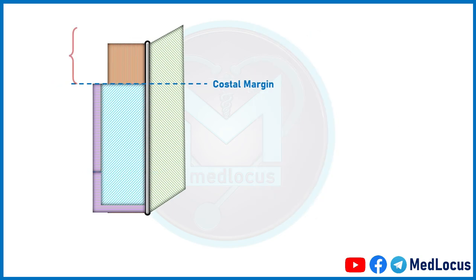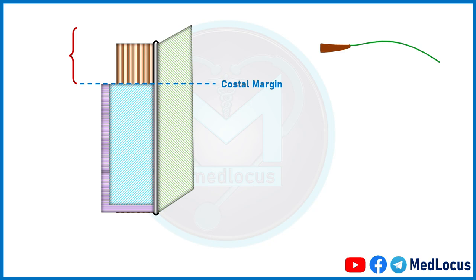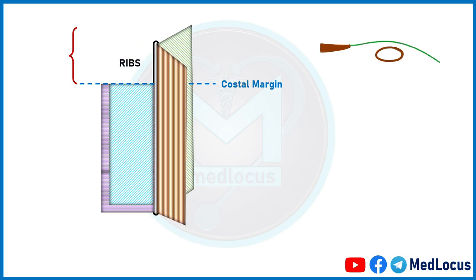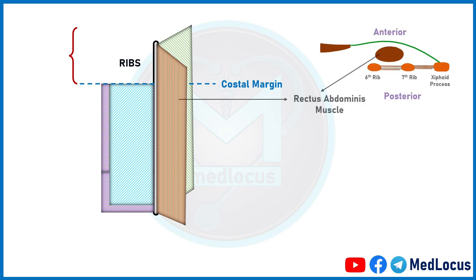Now we will talk about the formation of the rectus sheath above the costal margin. The aponeurosis of the external oblique muscle is reflected and drawn. The rectus abdominis muscle is also reflected and drawn. Above the costal margin, you can see only the ribs posterior to the rectus abdominis muscle.